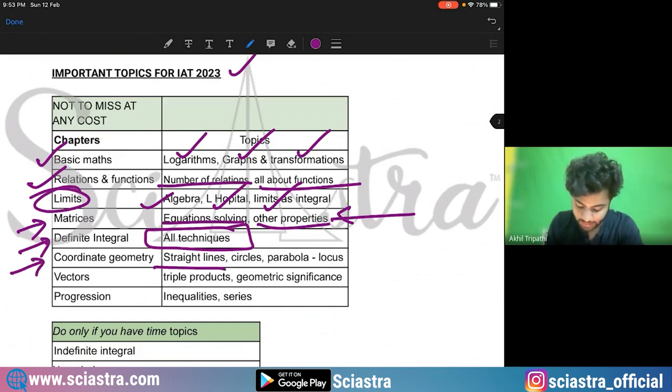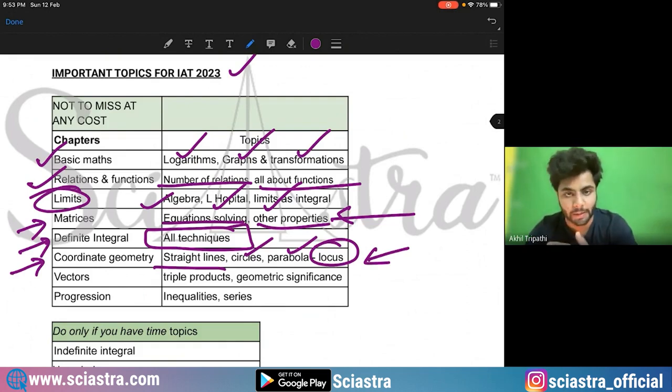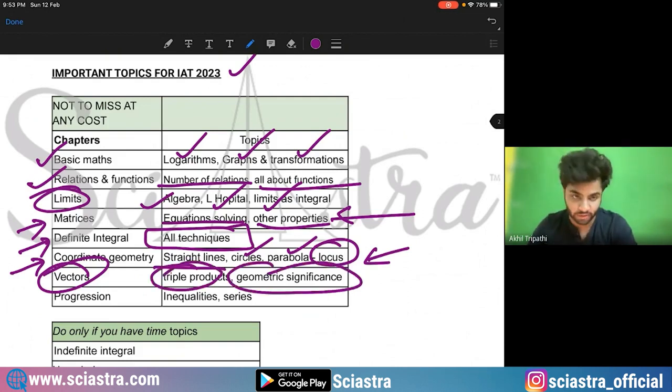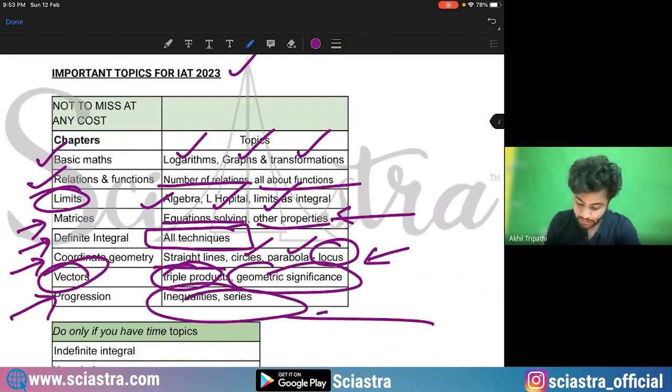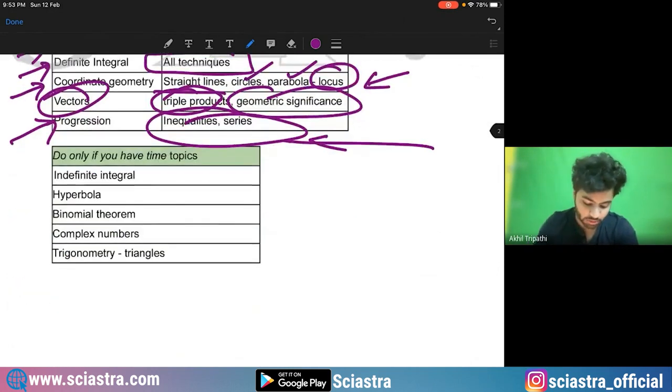Coordinate geometry, straight lines, circle, parabola, especially the locus part. Locus of straight line, circles, parabola, locus questions are important. Vectors, the important topics are vector triple product and geometric significance of the vectors. Coming to progressions, so inequalities and series, arithmetic progression, geometric progression and inequalities.